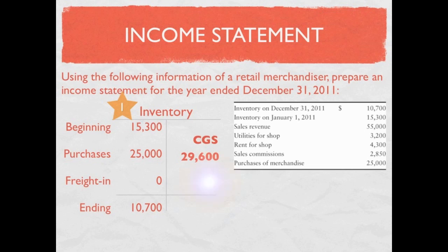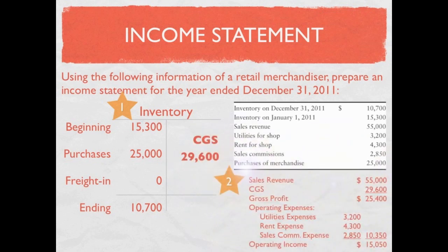Now we can create the income statement. We start with sales revenue of $55,000. We subtract any contra revenue accounts — sales discounts, sales returns, and allowances — but in this case we don't have any, so we go right to subtracting cost of goods sold of $29,600, giving gross profit of $25,400. From gross profit we subtract all operating expenses — utilities, rent, and sales commissions — ending up with operating income of $15,050.